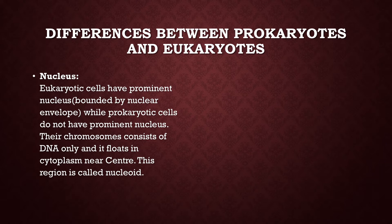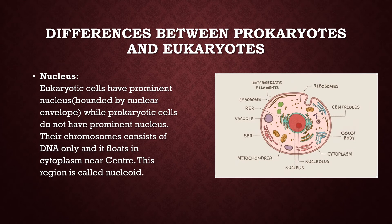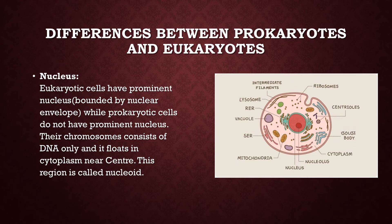On the right side of the slide you can see the diagram of a eukaryotic cell that has a prominent nucleus and many other organelles that were discussed in our previous lectures.